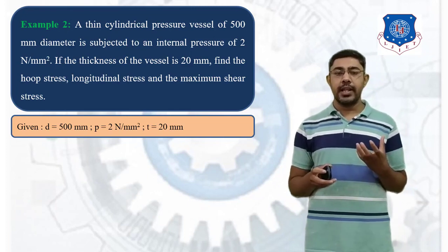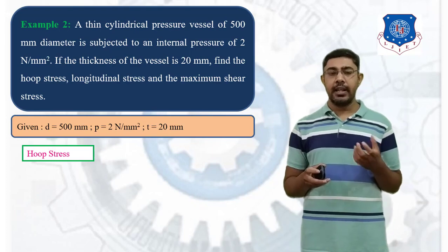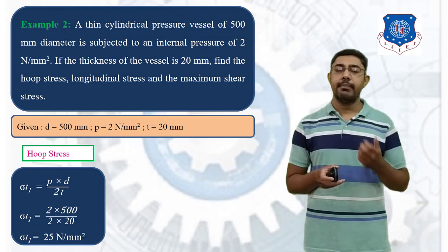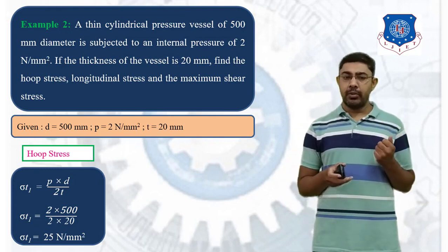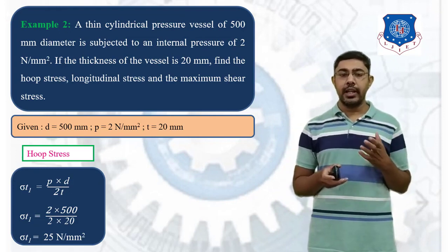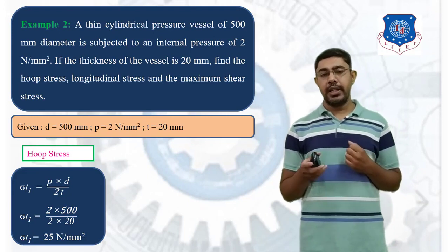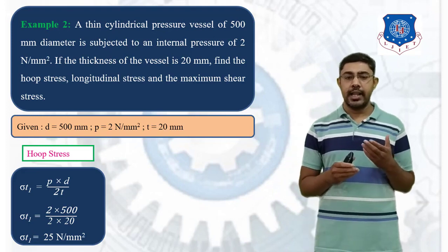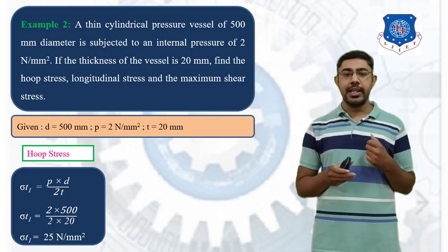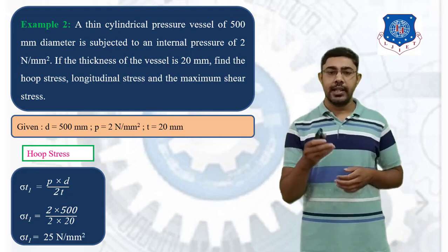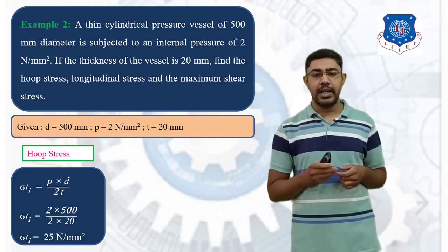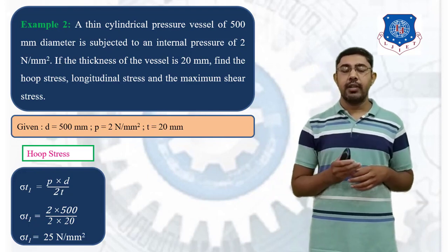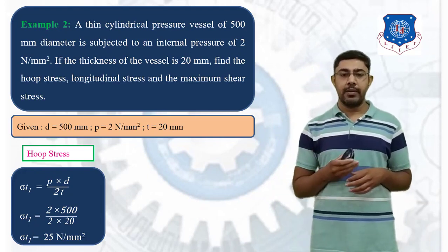First, consider the hoop stress. The hoop stress sigma T1 = P·D / (2T). Placing the values — P = 2 N per mm square, D = 500 mm, T = 20 mm — we get sigma T1 = 25 N per mm square.